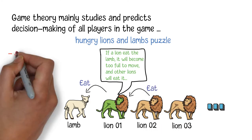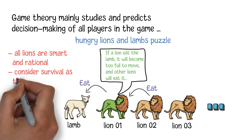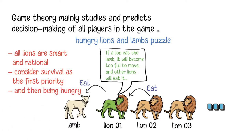Let's assume that all lions are smart and rational, which means that they will consider survival as the first priority, and then being hungry. If the safety can be guaranteed, a lion will choose to eat the lamb or the overeating lion beside it.